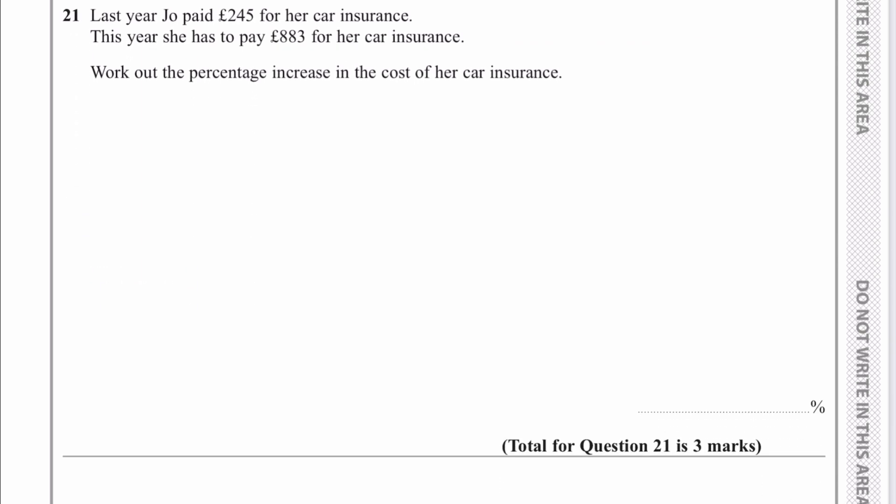Last year, Jo paid £245 for her car insurance. This year, she paid this. Oh my gosh, that's a big increase. So how do we work out percentage increase? Well, percentage increase of anything is the difference divided by the original, multiplied by 100. So the difference between what she's paying now and what she paid last year is going to be 883, take away 245, divided by her original amount, which was £245. I'm going to multiply that by 100 to make it a percentage. And I'm going to get a massive increase of 260.40816. So poor Jo is having to now pay an increase of 260% on her car insurance. I think I would be quite upset.